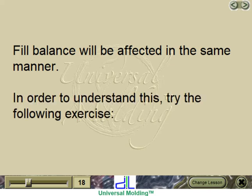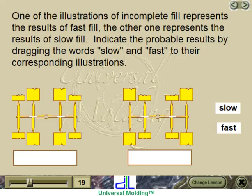In order to understand this, try the following exercise. One of the illustrations of incomplete fill represents the results of fast fill; the other one represents the results of slow fill. Indicate the probable results by dragging the words slow and fast to their corresponding illustrations, then press continue.